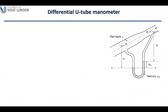We have another type of manometer called the differential U-tube manometer. The shape looks like a U, and both limbs of the manometer are connected to a pipe. One limb connects to the upstream side with pressure P1, and the other limb connects to a downstream point with pressure P2.